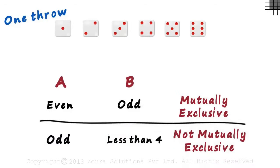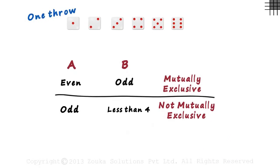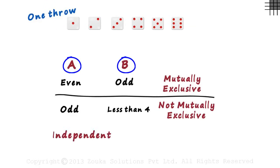Many get confused between independent and mutually exclusive events. If you are one among those, just remember these two simple things. Two events are independent if they are not related.